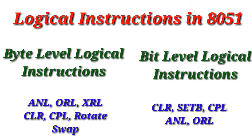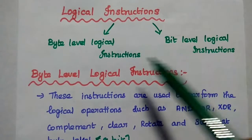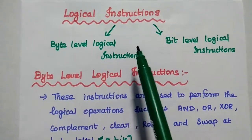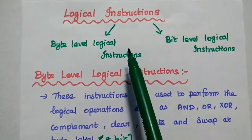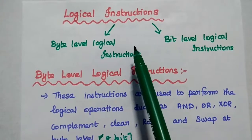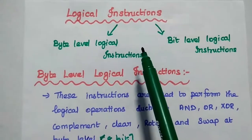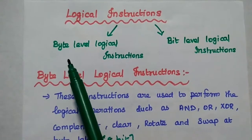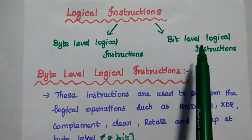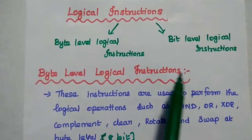Dear students, now we are going to discuss byte level logical instructions and bit level logical instructions of AT51. Based on the number of bits used in logical operations, there are two types of logical instructions available in the AT51 microcontroller. The first one is byte level logical instruction, and the second one is bit level logical instruction.